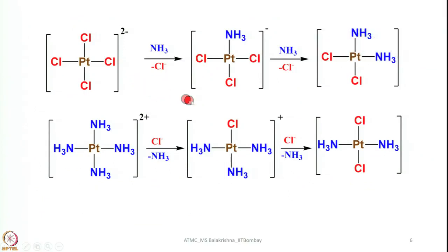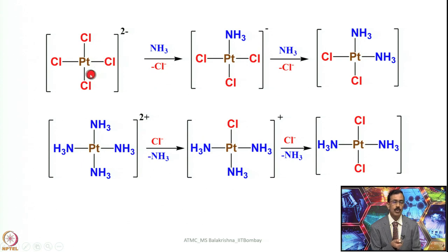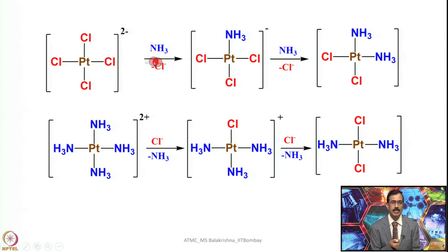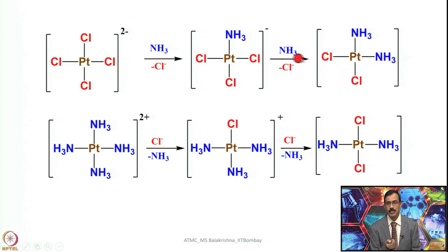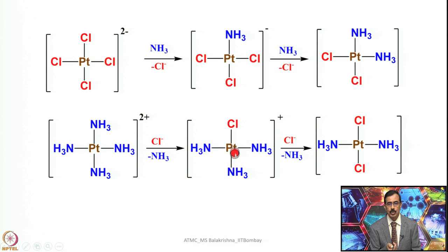Recall how we made cis and trans-platin complexes. We took tetrachloroplatinate and added ammonia — there is no preferred leaving of any of the chlorides, so any one can leave and NH3 comes in. When another ammonia is added, it goes to the cis position. On the other hand, if you take tetraamine platinum(II) complex and add chloride, the first one can go anywhere, but the next chloride goes to a position trans to the first chloride, resulting in the trans complex.